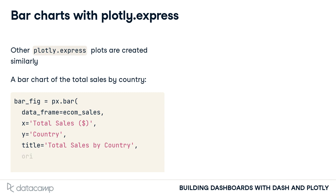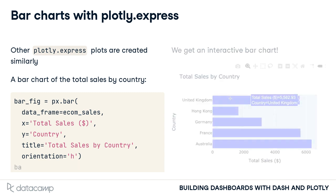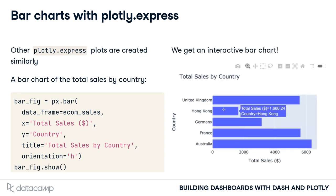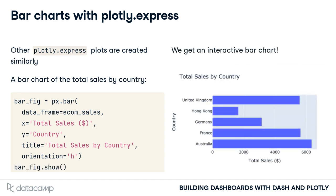We also have an additional argument specific to the bar chart: orientation. We would like the bar chart to be horizontal, so we specify this argument as h rather than v for vertical. Again, we get an instant interactive chart with very little code.